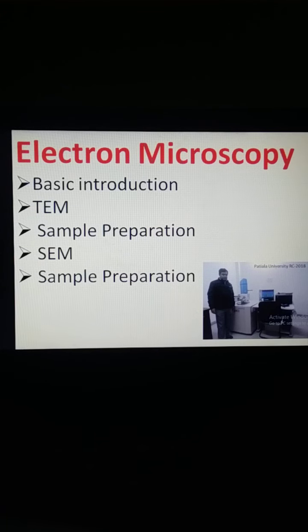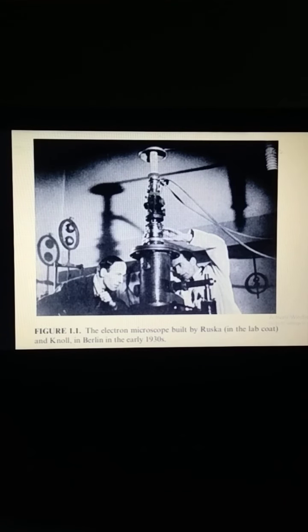Electron Microscopy. Today we will learn about electron microscopy — a basic introduction. The electron microscope was discovered by Ruska and Knoll of Berlin University in 1931. This picture is showing Ruska and Knoll with their electron microscope.